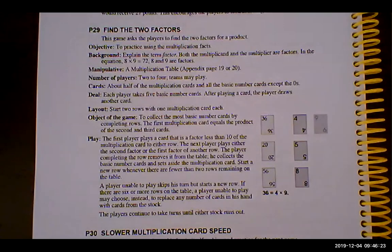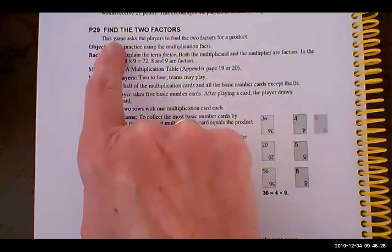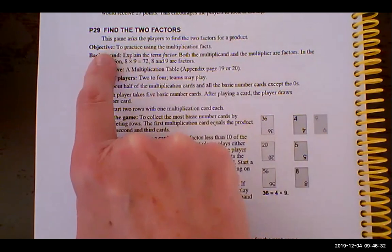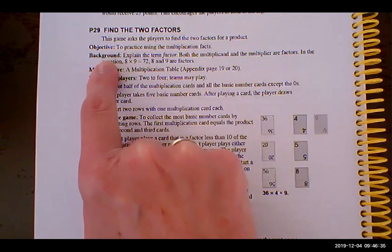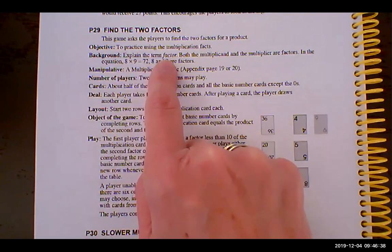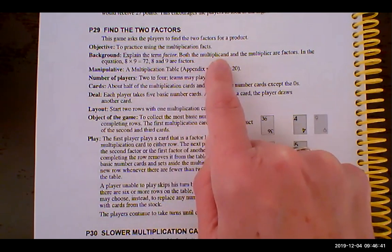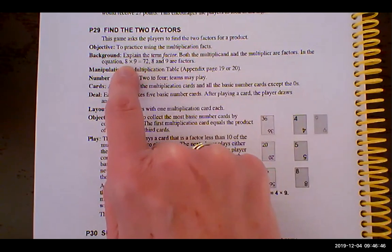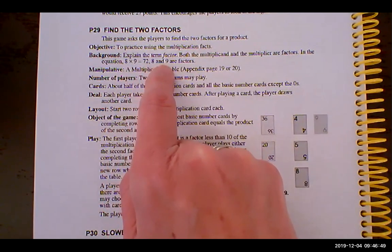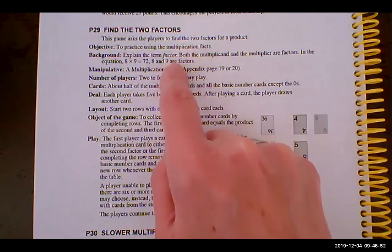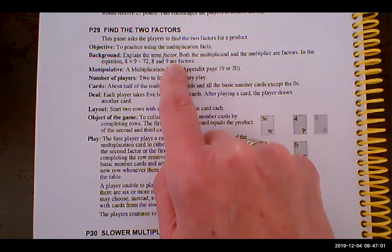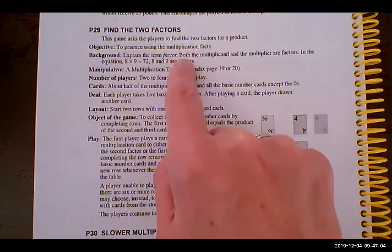So here's a closer view of the game. Sometimes it'll lead off with some kind of a note to you. Here's our objective of the game, background. In this case, it's talking about telling you to explain the term factor to a child. So both the multiplicand and the multiplier are factors. For example, in the equation 8 times 9 equals 72, 8 and 9 are the factors. So this is kind of helping you help the child. If you're using the curriculum, this probably will have been discussed. If you're using this with another program, you may need the background information.